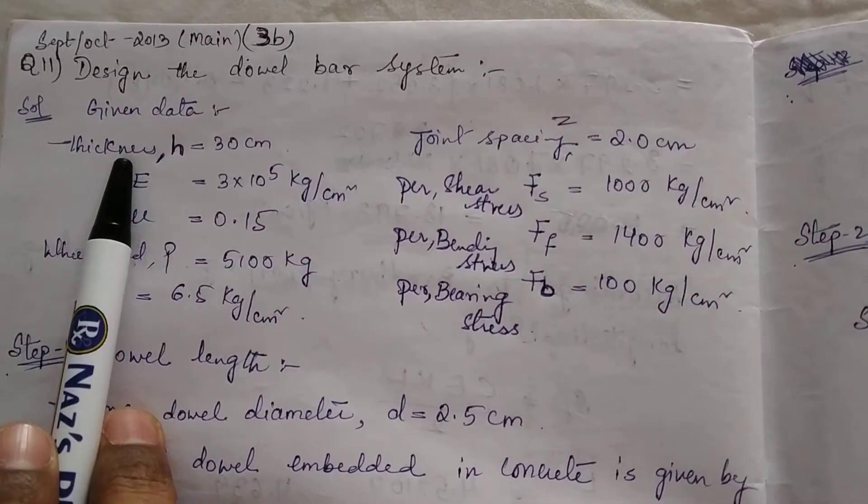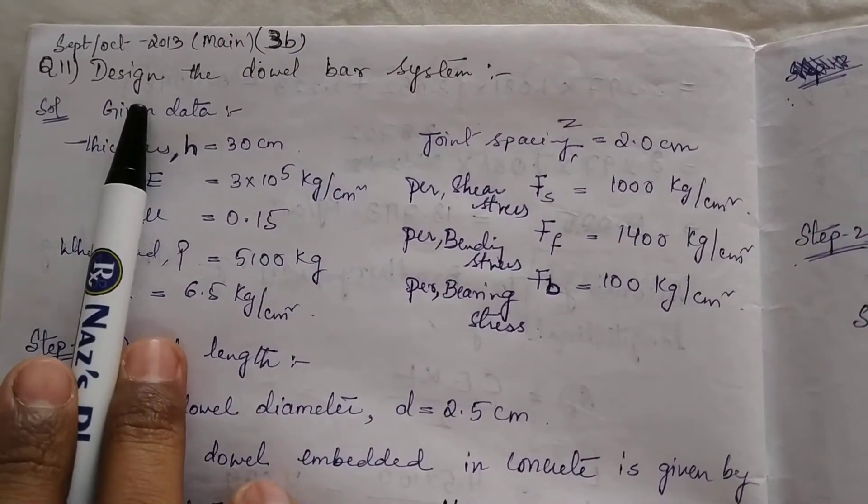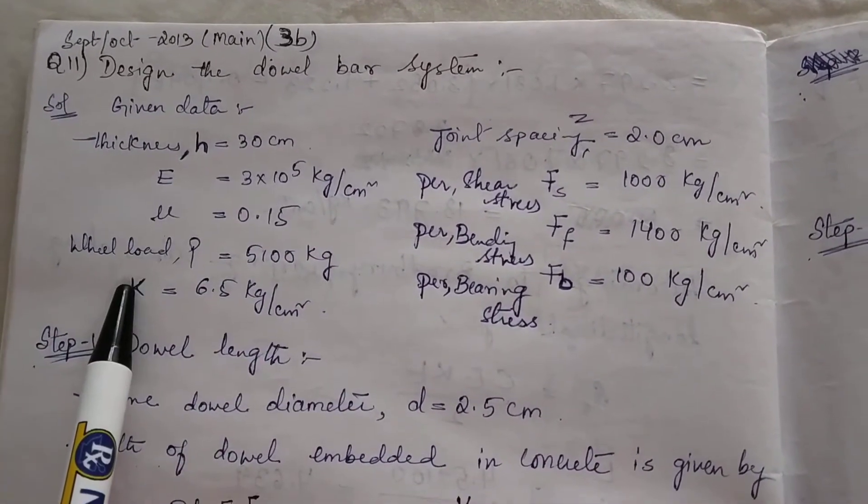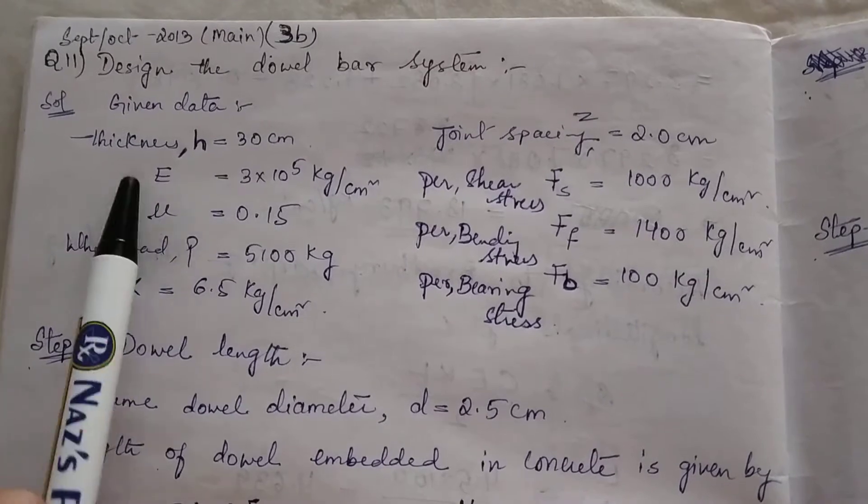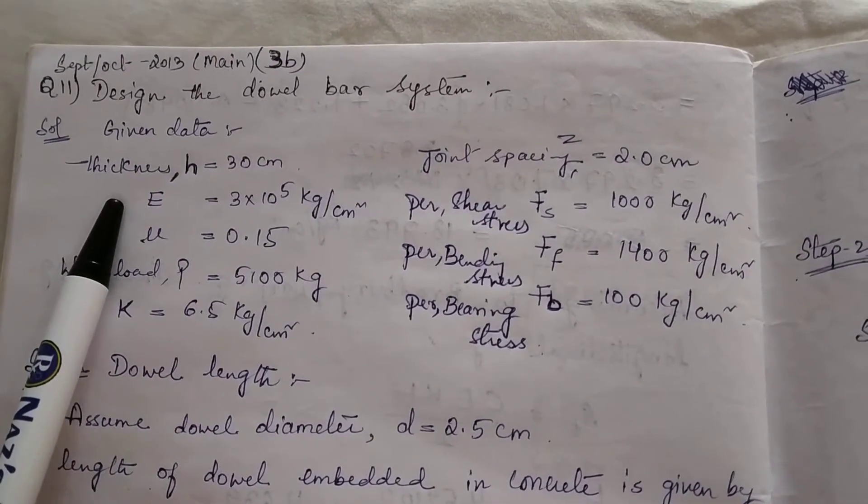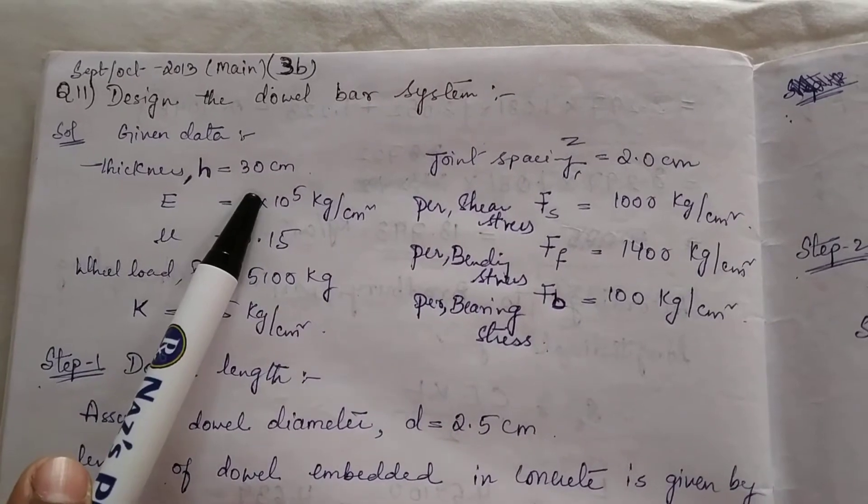Dear students, in this video I am going to show how to design the dowel bar system for the given values and parameters. Given parameters are: thickness of the CC slab H = 30 centimeters.